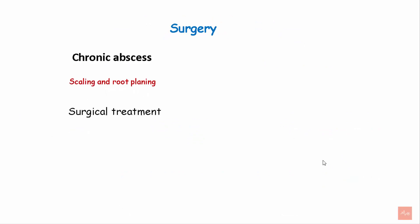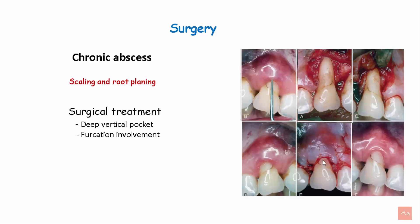Surgery is performed in case of chronic abscess after scaling and root planing. Surgical treatment is provided when deep vertical pockets and furcation involvement are evident. This clinical picture represents the periodontal abscess associated with the pocket depth. After giving vertical releasing incisions, proper debridement of the area is performed and the flaps are sutured back. Post healing, the color, contour, and size of the gingiva are restored back to normal.